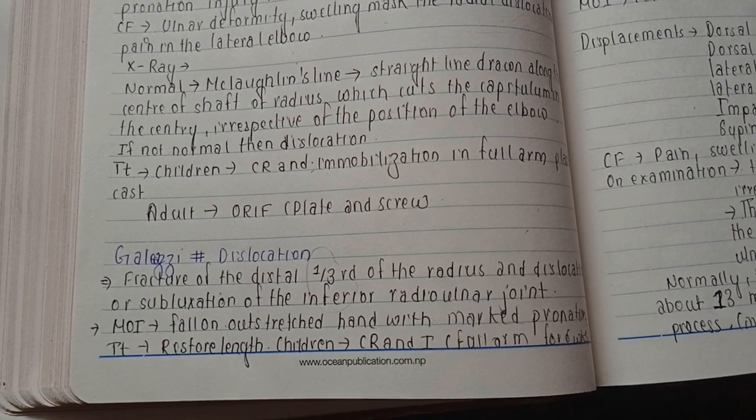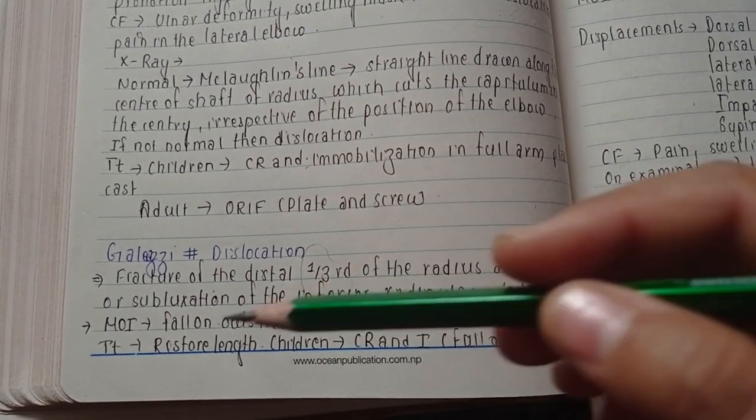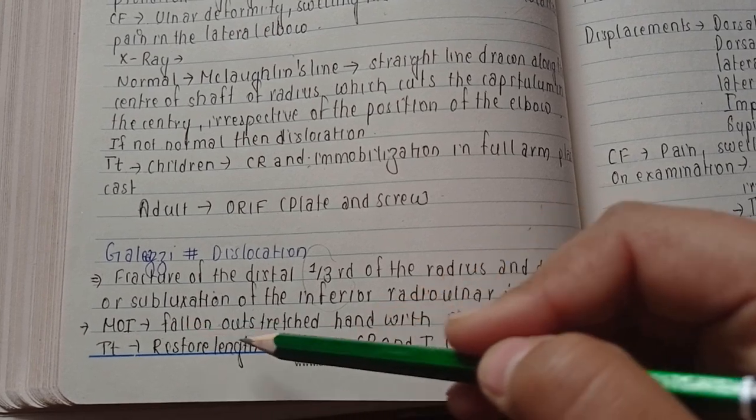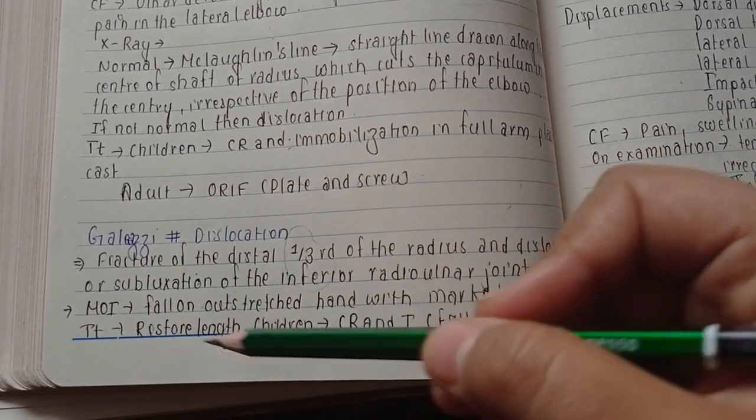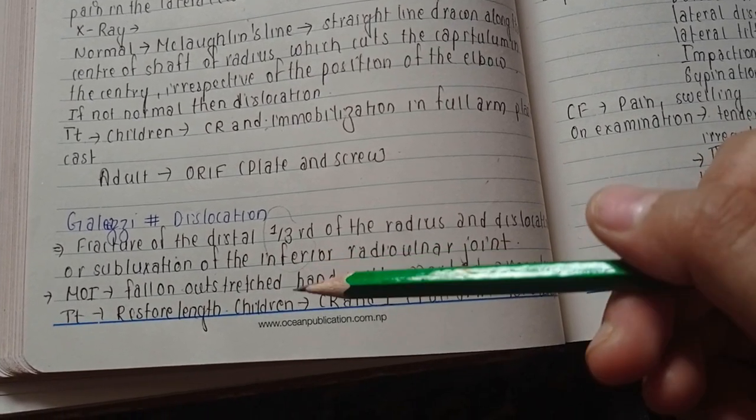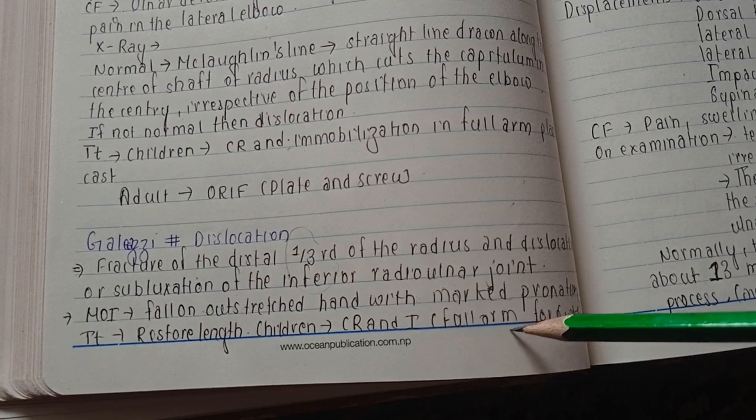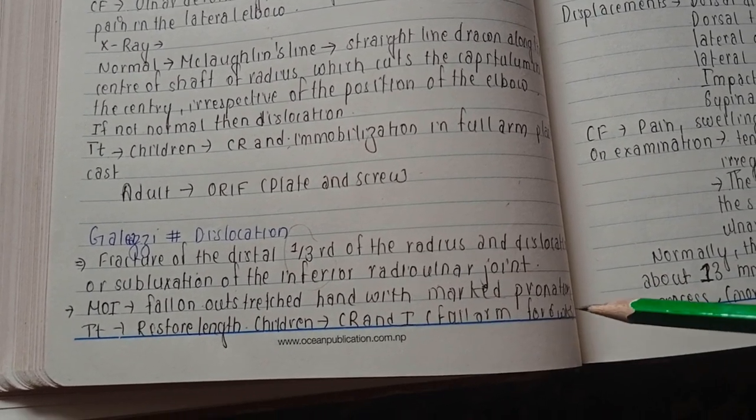Mode of injury here is also fall on outstretched hand with marked pronation. The treatment is to restore the length. In case of children, this can be done by closed reduction and immobilization by using full arm plaster cast for six weeks.